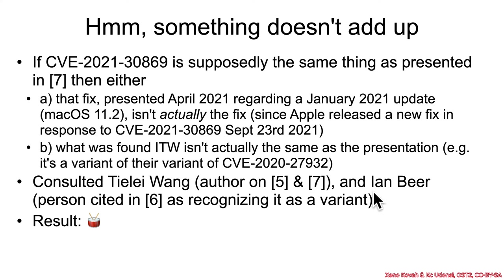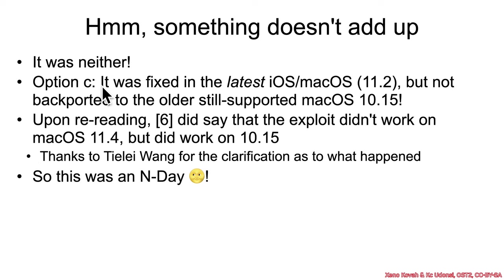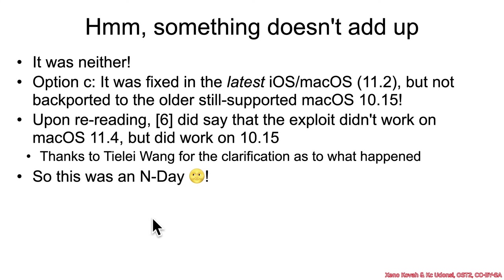I asked the authors of these papers — and the answer was neither option A nor B. It was option C. The vulnerability was fixed in the latest iOS and macOS updates in January 2021, that being macOS 11.2, but it was not backported to the older but still supported macOS 10.15. Rereading reference 6, it did say the exploit didn't work on macOS 11.4 but did work on 10.15 — which is where they actually caught it in the first place. This means the vulnerability was actually an n-day and not a zero-day in the wild. An n-day is where the vulnerability is known and the exploit is caught in the wild after it has already been publicly disclosed. This is my first opportunity to use the n-day sun — I'll call it the noon-day sun instead of the zero-day moon.